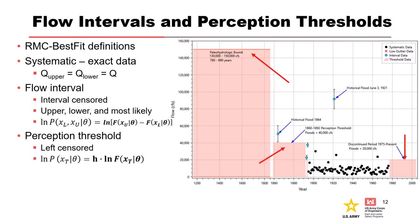Interval data is defined by an upper and lower bound. In Best Fit you also enter a most likely flow, and that informs the blue or green dot shown in the center of the error bar.